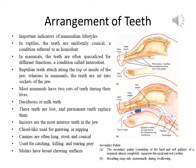Adult mammals have up to four kinds of teeth. Incisors are the most anterior teeth in the jaw; they are usually chisel-like and used for gnawing or nipping. Canines are often long, stout and conical, usually used for catching, killing and tearing prey. Canines and incisors have single roots. Premolars are positioned next to canines, have one or two roots and cusped surfaces for chewing. Molars have broad chewing surfaces and two upper molar or three lower molar roots.